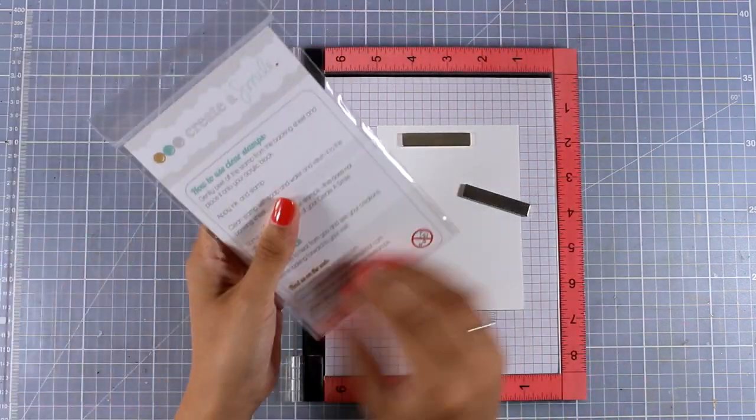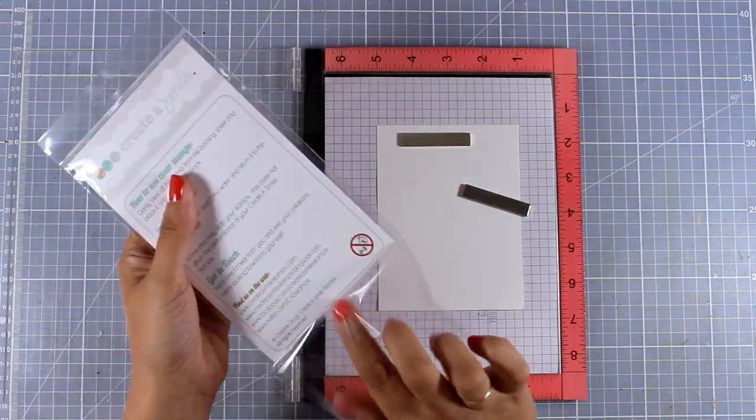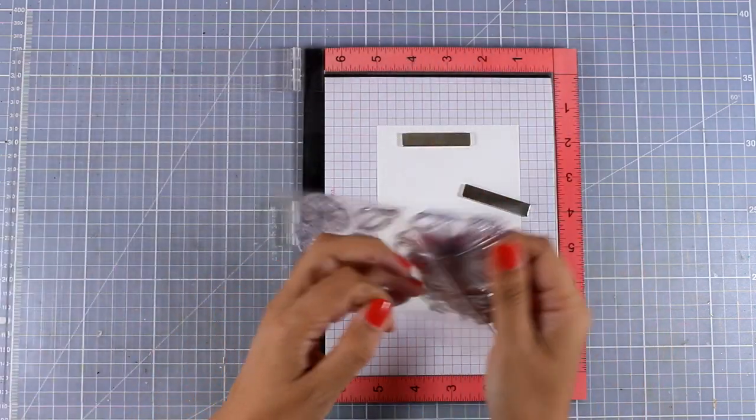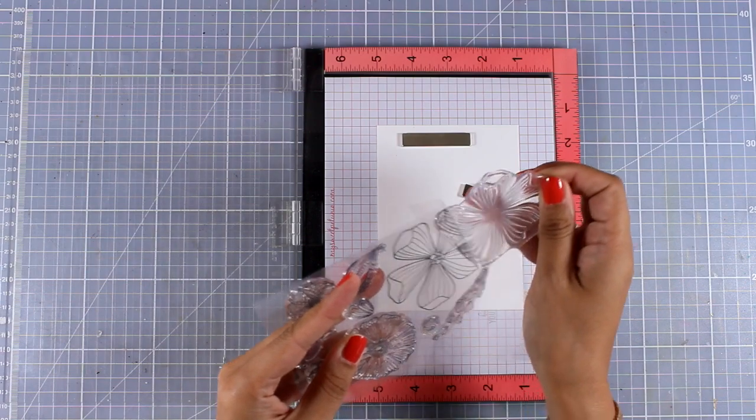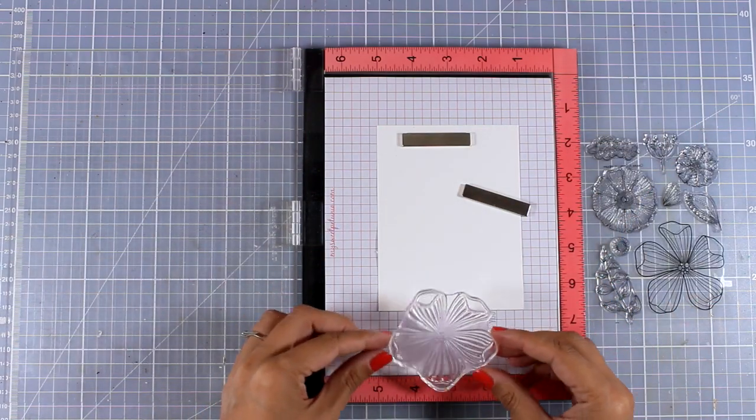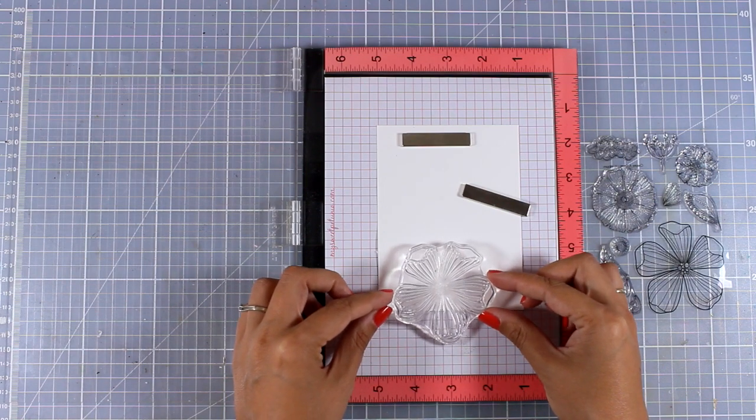So I'm going to do some masking today and I'm going to work with my Misti, just because I want to stamp again and again on top of a piece of white cardstock. First of all, I'm going to pick up the biggest of the flowers included in the stamp set. I'm going to place it at the bottom of my paper there, and then I will go ahead and stamp it.